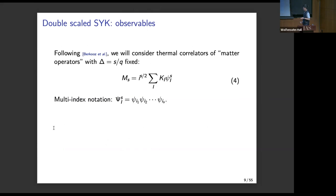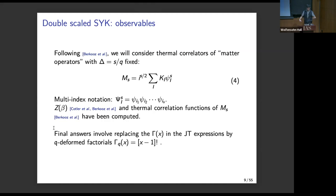The observables in this theory were discussed by Berkooz et al., and they are random operators. I'm using a multi-index notation where psi is a product of fundamental fermions. The couplings k are random and independent of the couplings that appear in the Hamiltonian. So all observables, including the Hamiltonian, are just random operators. Berkooz and company, in a series of remarkable papers, completely solved the model — they computed the partition function and all thermal correlation functions. The final answers involve q-deformed gamma functions. Given that they completely solved the model, you might wonder what else there is to talk about. The answer is that we want to understand their solution in a bulk language — that's the main motivation.